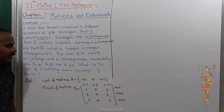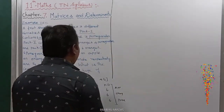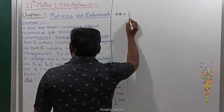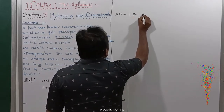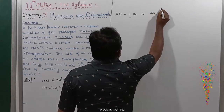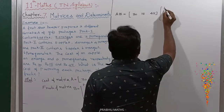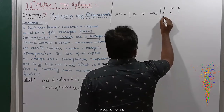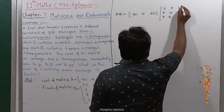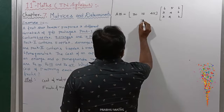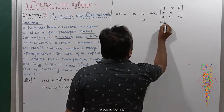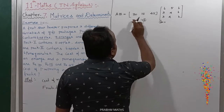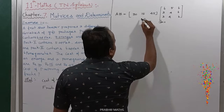To find the cost of each package, multiply the two matrices A and B. A is a 1 by 3 matrix: [30, 15, 45]. B is a 3 by 3 matrix. By the multiplication rule of matrices, the first matrix columns must equal the second matrix rows, so the resulting matrix AB will be a 1 by 3 matrix giving us the answer.